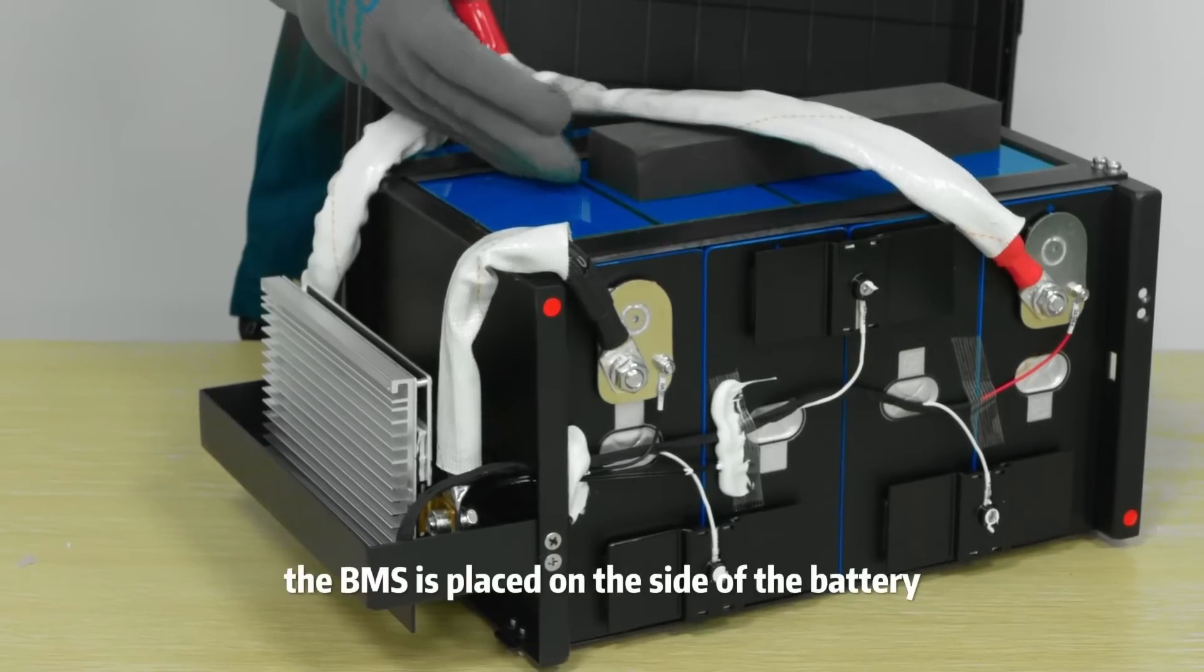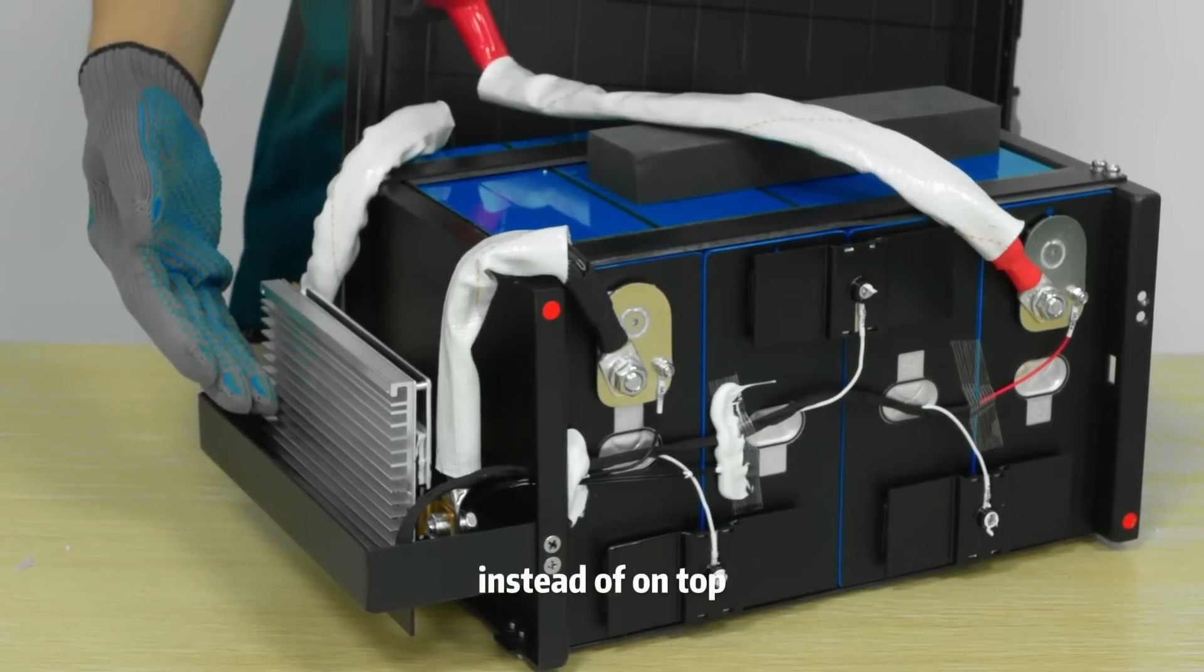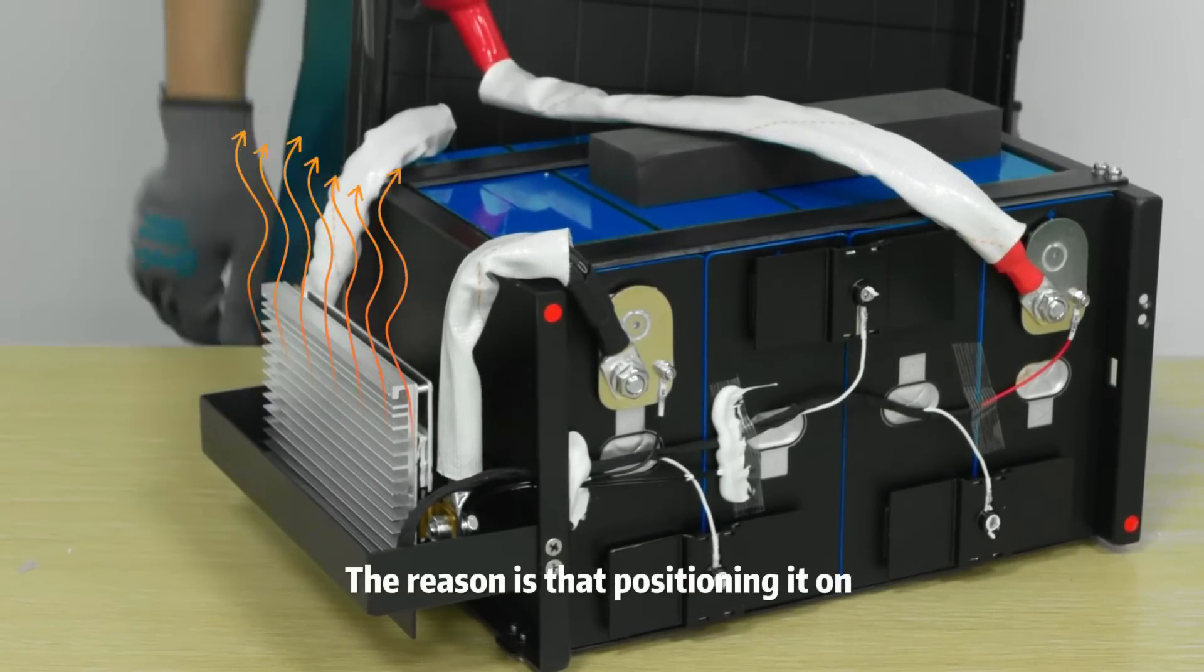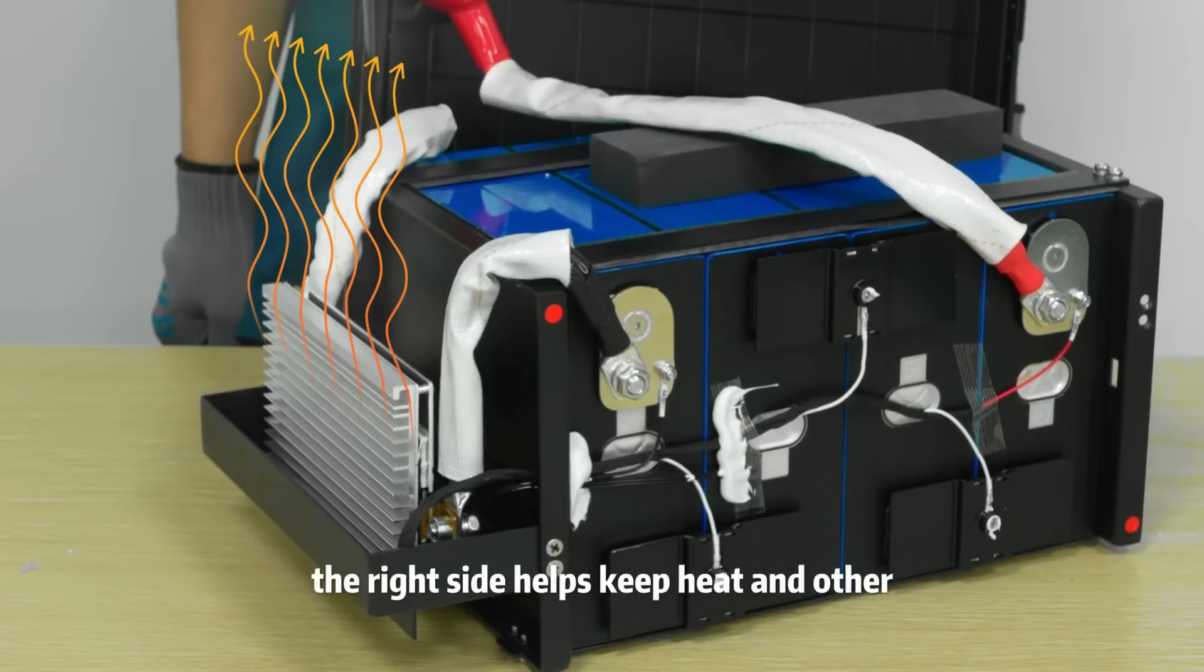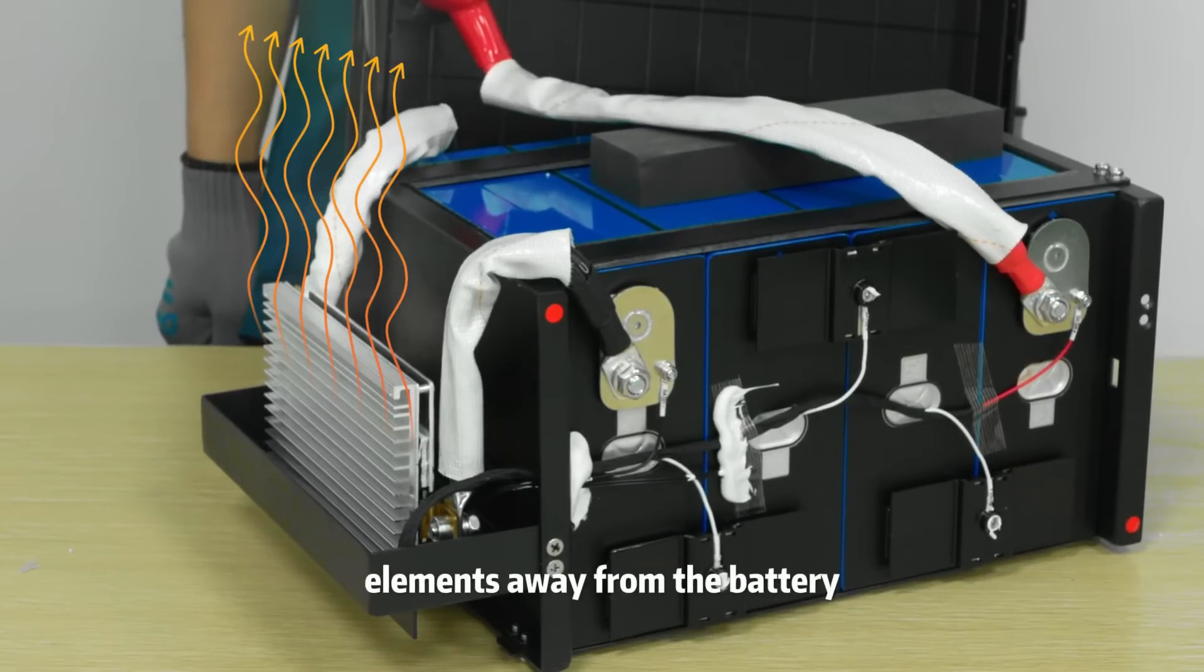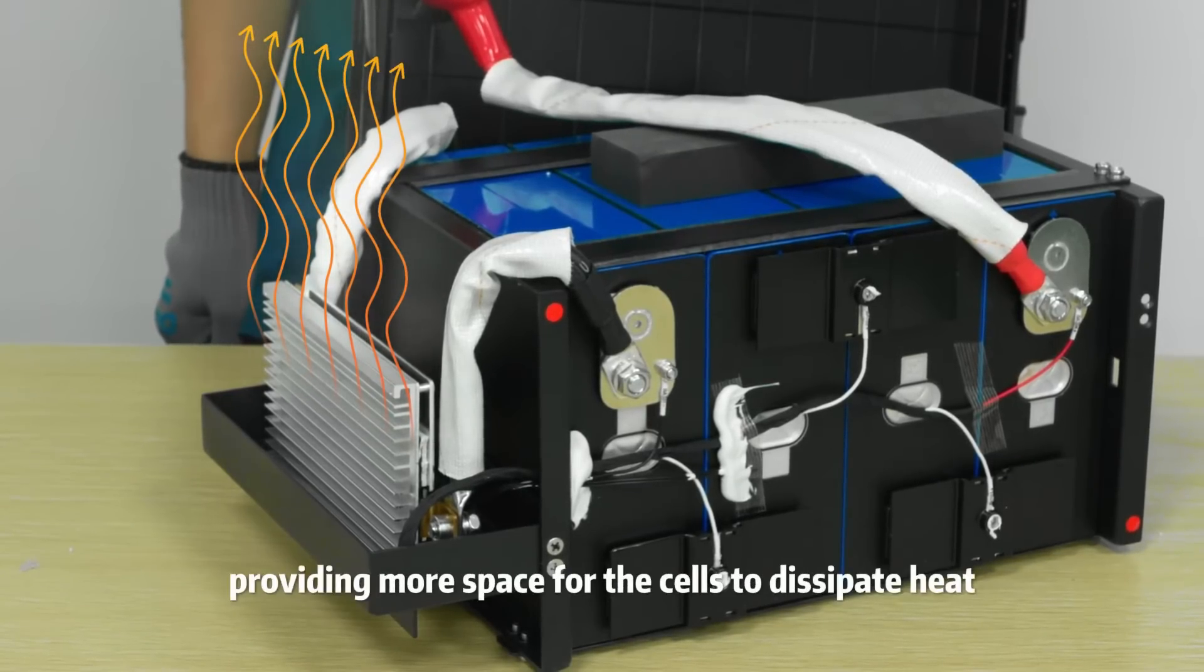Some might wonder why the BMS is placed on the side of the battery instead of on top like with other batteries. The reason is that positioning it on the right side helps keep heat and other elements away from the battery, providing more space for the cells to dissipate heat.